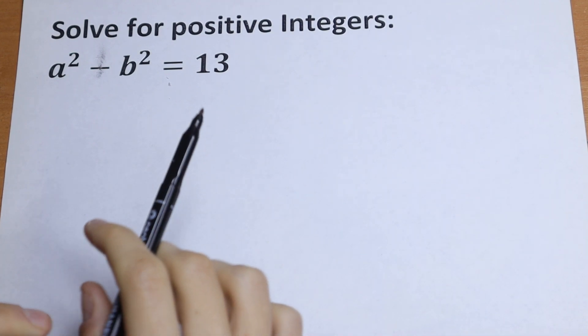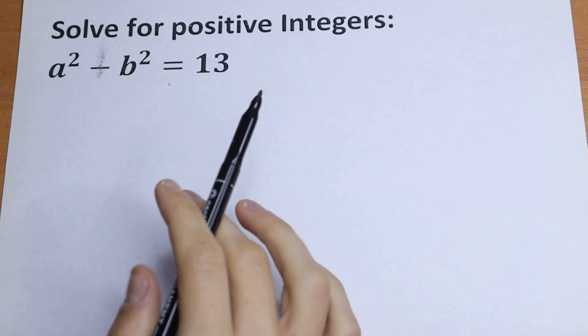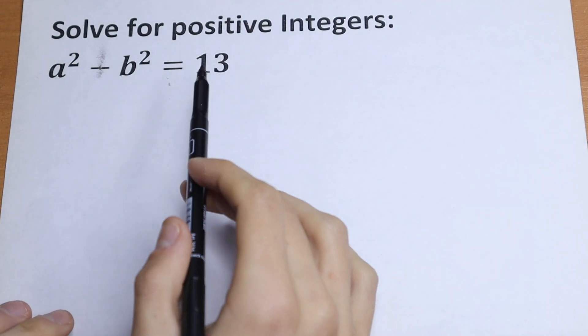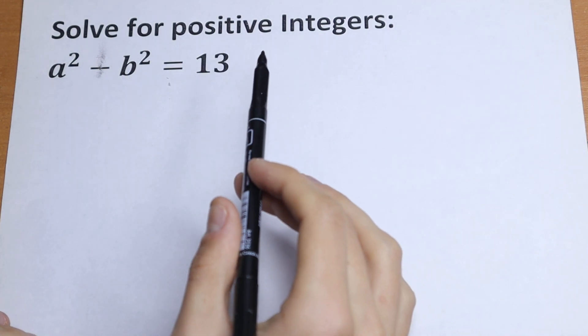Hello everyone, welcome back to MathMode. Here we have an interesting algebra problem, so we need to solve this for positive integers: a squared minus b squared equal to 13.